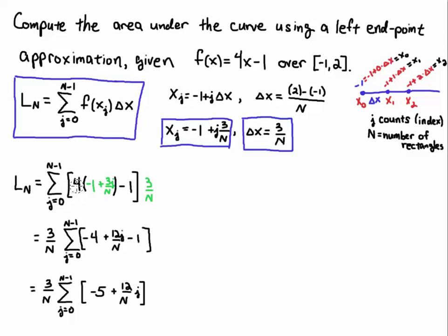Then I'll distribute the 4, 4 times minus 1 is minus 4, 4 times 3j over n, 4 times 3 is 12, j over n, and then the minus 1 just comes down. Then I'll simplify. Minus 4, and minus 1 gives us a minus 5, plus 12j over n.